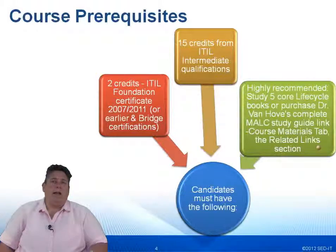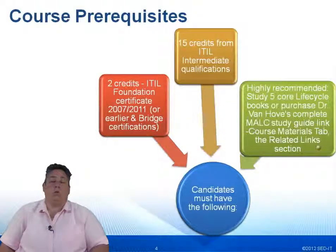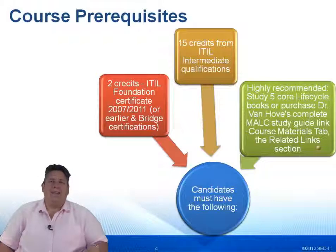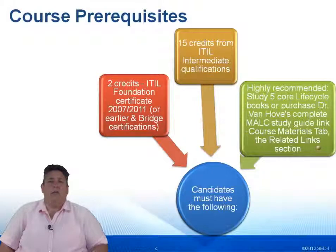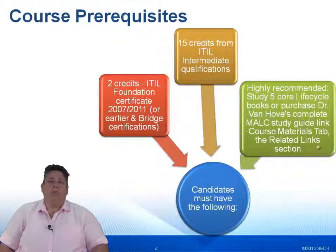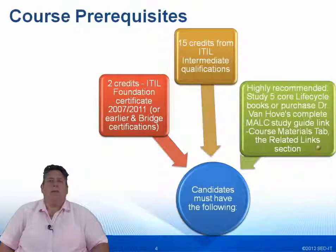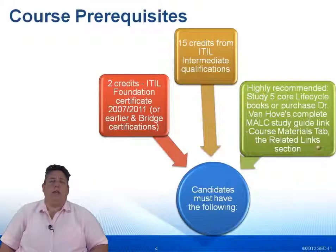Those 17 credits are mandatory. The five credits you earn for successful completion of MALC will give you the necessary 22 to achieve the EIDL Expert. To help you with this course, we highly recommend that you have the five core life cycle volumes — the five vital volumes — that you can review, reference, and read, or purchase the complete guide or study guide to MALC. Both of those links can be found in the Course Materials tab on the course page.